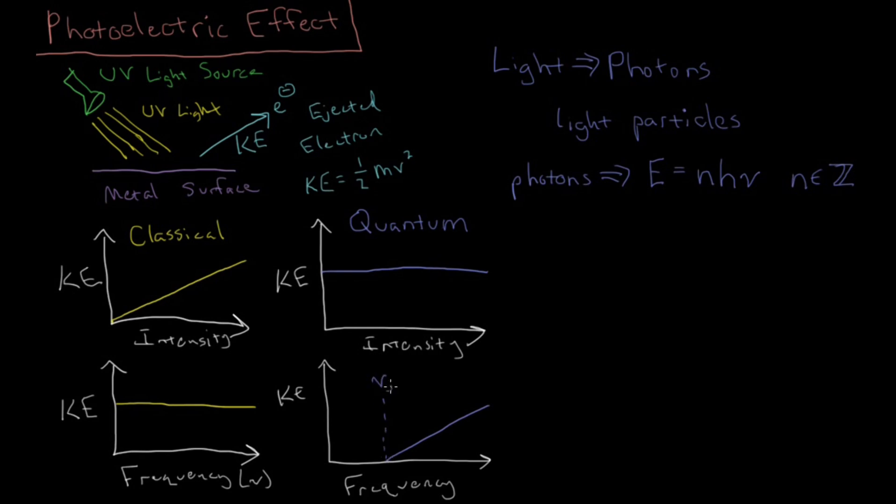Then he also correctly predicted that there will be some minimum frequency, nu-naught, where electrons won't be ejected below that frequency, and then beyond that frequency, the kinetic energy of the electrons increases linearly.